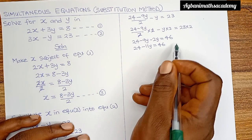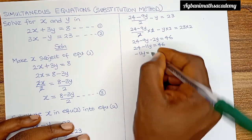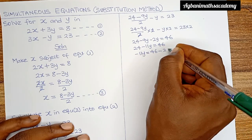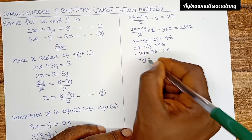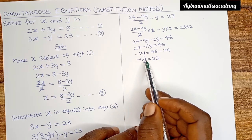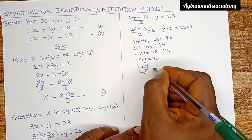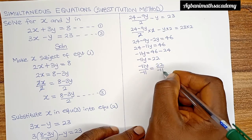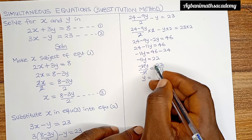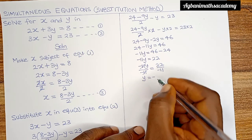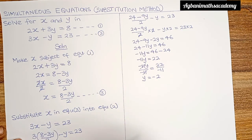Crossing plus 24 over to the right side gives us minus 24. So minus 11y is equal to 46 minus 24. 46 minus 24 gives us 22. So minus 11y is equal to 22. For us to get the value of y, we divide both sides by minus 11. So minus 11y over minus 11 is equal to 22 over minus 11. This cancels, and there is an invisible positive sign on 22, so plus divided by minus gives us minus. 22 divided by 11 is 2. So y is equal to minus 2.